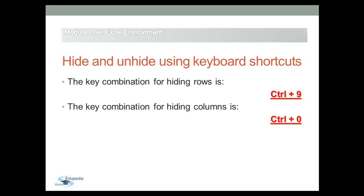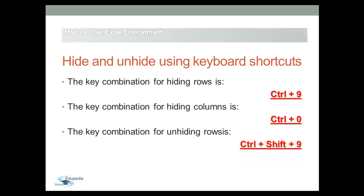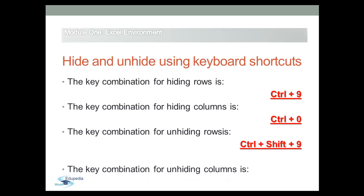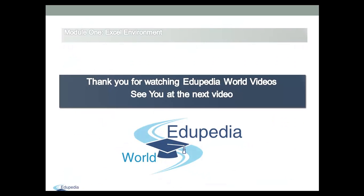The key combination for unhiding rows is Ctrl+Shift+9, and the key combination for unhiding columns is Ctrl+Shift+0. To use these unhide shortcuts, you should first highlight at least one cell in the columns or rows on either side of the hidden columns or rows. Thank you for watching Eduopedia World videos — see you in the next video.